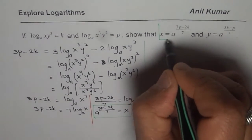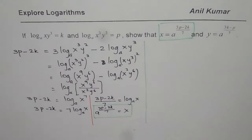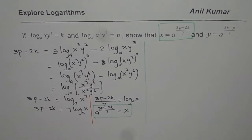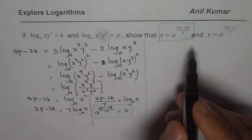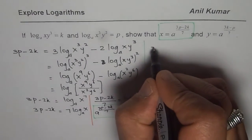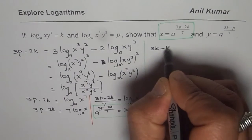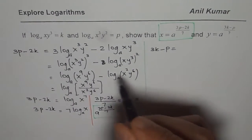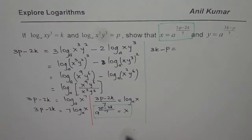Now converting this to exponential, I will write a to the power of (3p - 2k)/7 equals x. So that is how you can show that x is equal to this, which is right there. Let us follow these steps once again to show what is the value of y. So this time we are going to calculate 3k - p. Now you can pause the video, do all these calculations, then check with my solution.